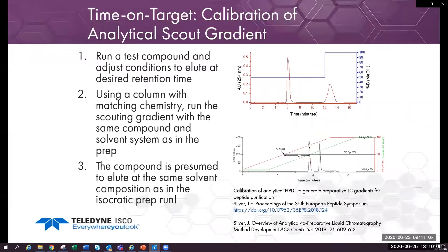Set the retention time to a desired value with a model compound, usually six minutes on 150 millimeter long column, and note the solvent composition that causes this retention. Using a matching analytical column, run a scouting gradient with the same compound using the same solvent system, including any modifiers.